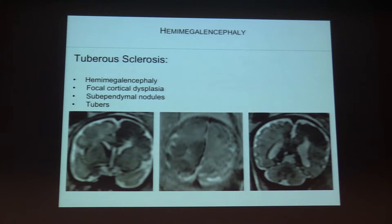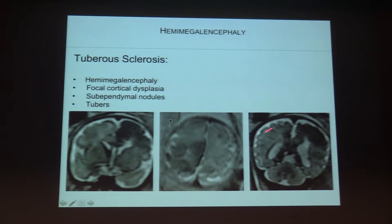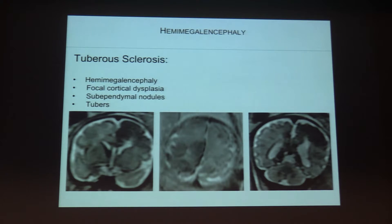Tuberous sclerosis has this pattern with hemimegalencephaly — one hemisphere appears bigger than the other. This aspect is due to the presence of dysplasia, which means an important disorganized segment of the cortex.